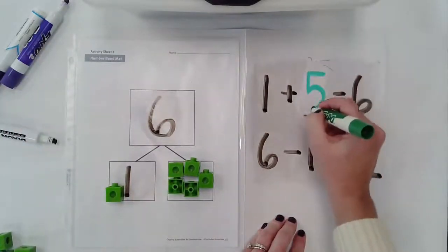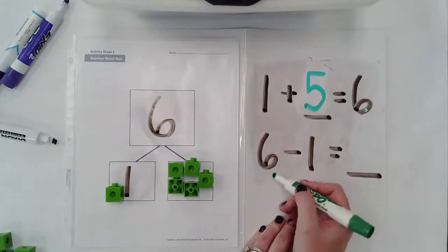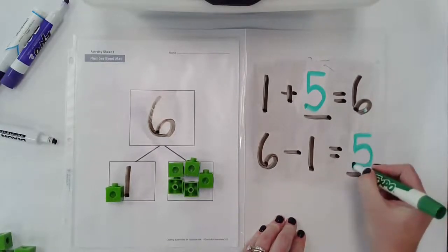Because I know that one and five together make six. And I know that if I take one away from six, I'm going to have five.